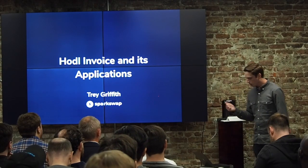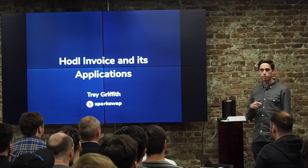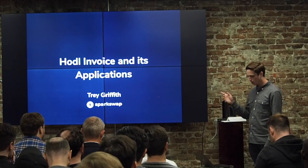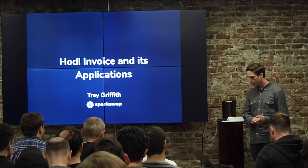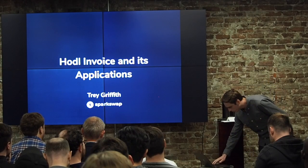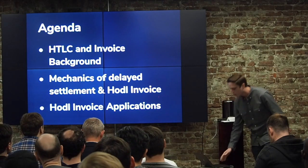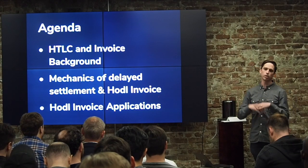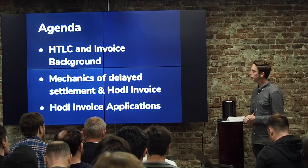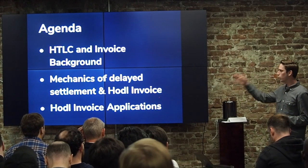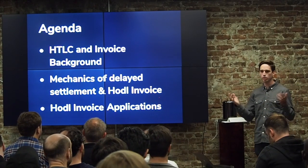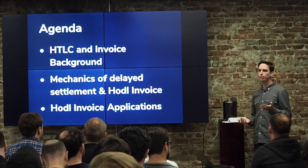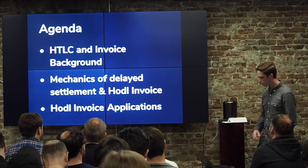Today I'm going to talk a little bit about a feature that Connor did not mention that's new to 0.6. There's also a C-Lightning version of it that's called Hold Invoice. Before we go into specifically what that feature is, I'll talk a little bit about HTLCs and how they work in Lightning, and then I'll talk about the mechanics of hold invoice or delayed settlement. Finally I'll spend a little bit of time talking about potential applications of this new technology.